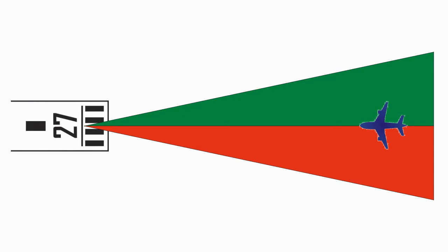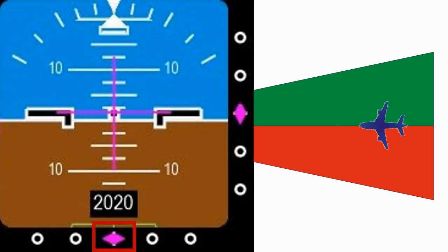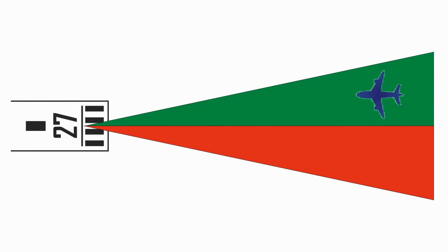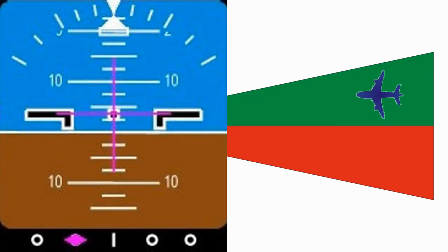The flight deck instrumentation provides the display. On a modern airliner, a magenta pointer will display on a horizontal scale below the attitude indicator. If the aircraft is perfectly on the centerline, the pointer will be in the center of the scale. If the aircraft moves away from the centerline, the aircraft antenna will detect the changes in modulation, which is then presented on the display. In this example, the aircraft is to the right of the centerline, so the centerline will be to the left of the aircraft. As the magenta pointer signifies the runway centerline, it will point to the left of the scale.